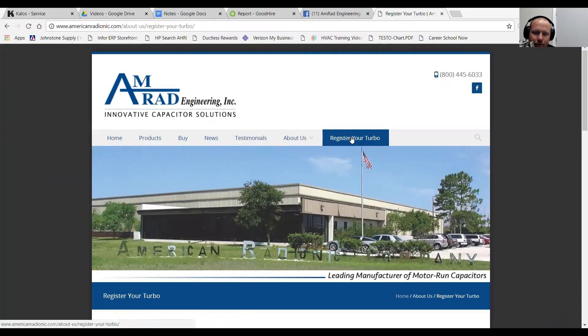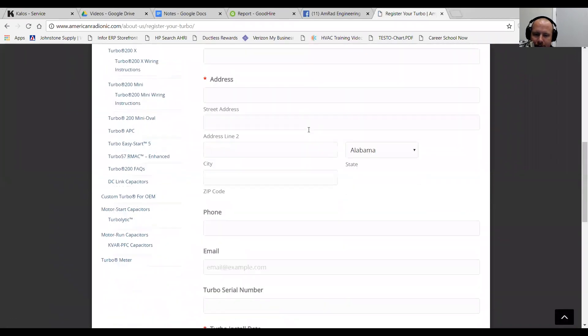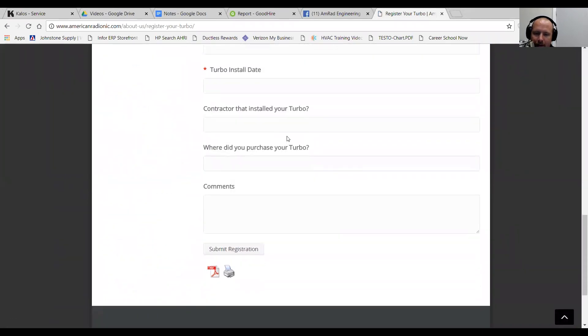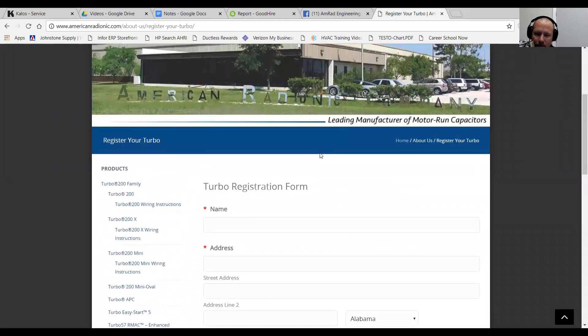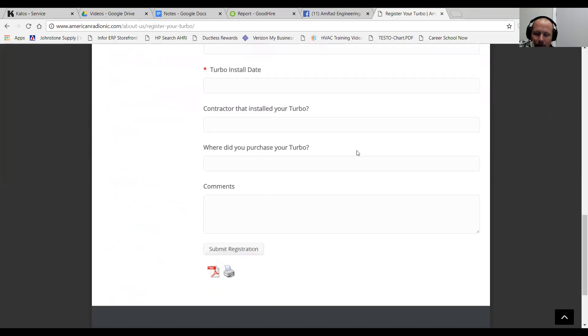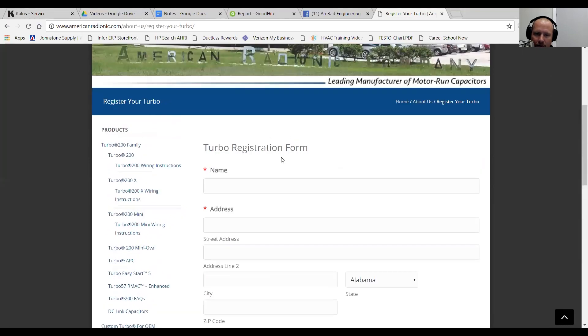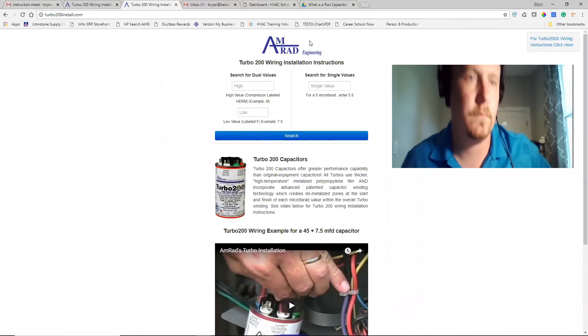You can easily register your turbo by going to americanradionic.com forward slash about us forward slash register your turbo or go to americanradionic.com and click register your turbo on the screen. You or the homeowner can easily do this, fill in all the information, and that way it's clear exactly the date that the turbo was installed at the home for the warranty, a five-year warranty. One nice thing about americanradionic is that they start the date from the date of installation and not the date of purchase.